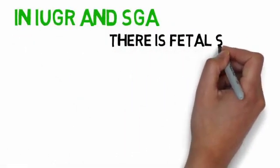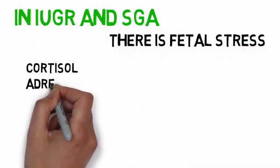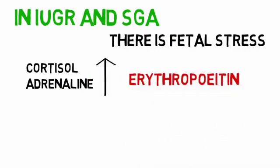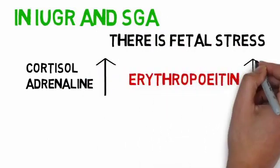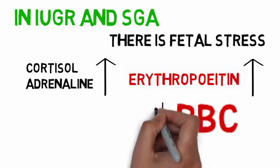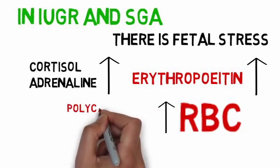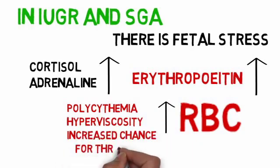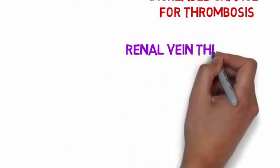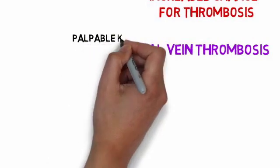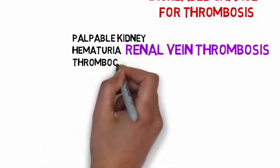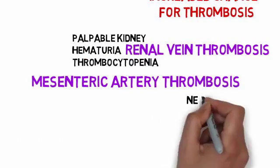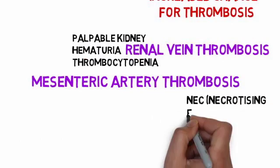In IUGR there is fetal stress. Therefore, levels of cortisol and adrenaline increase. Also, levels of erythropoietin increase, leading to increased RBC production — causing polycythemia, hyperviscosity, and an increased chance of thrombosis. For example, renal vein thrombosis causes palpable kidney, hematuria, and thrombocytopenia. Mesenteric artery thrombosis causes NEC, i.e., necrotizing enterocolitis.